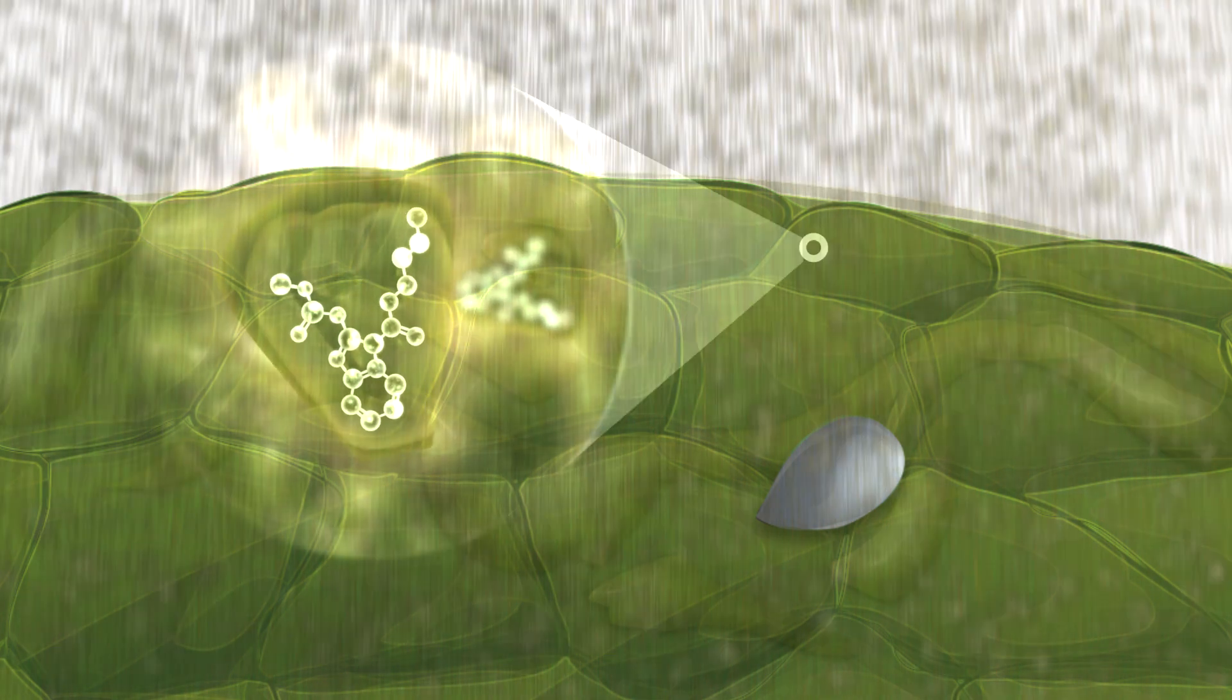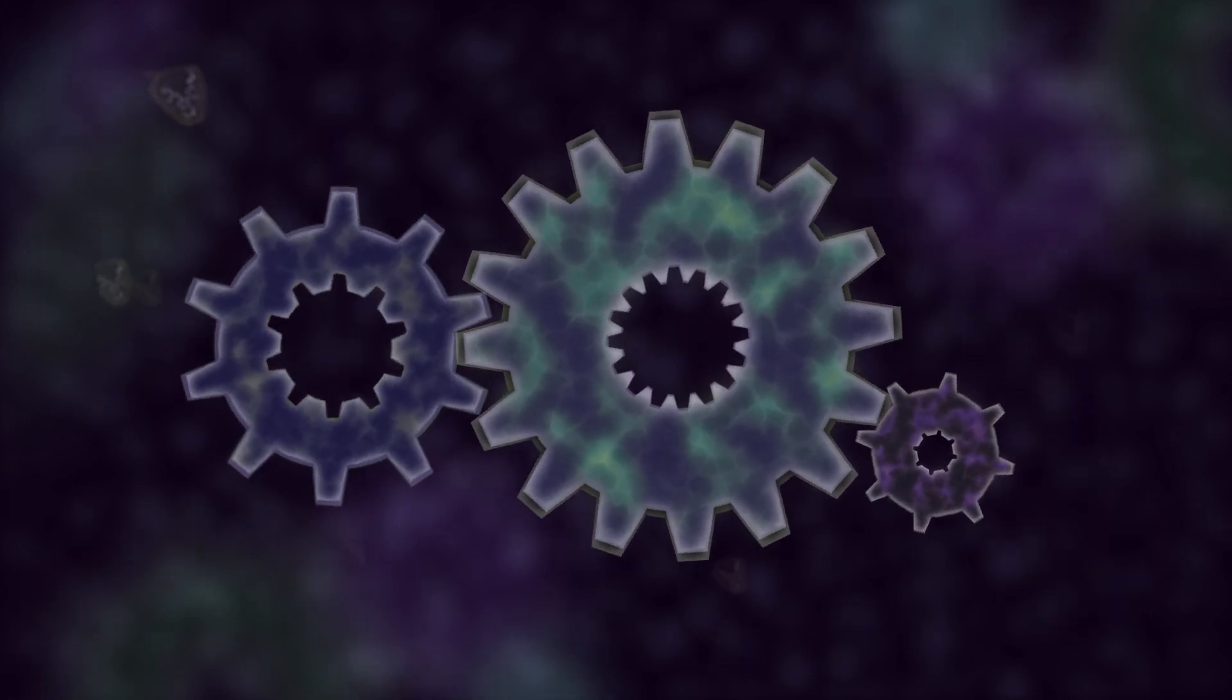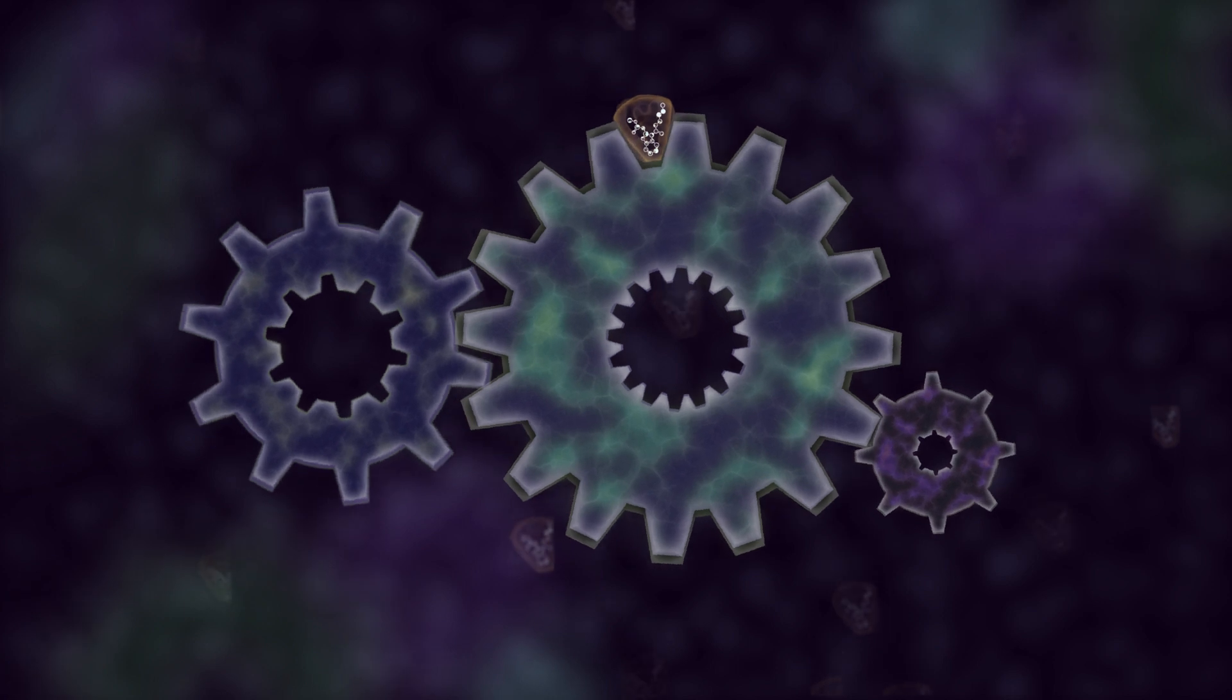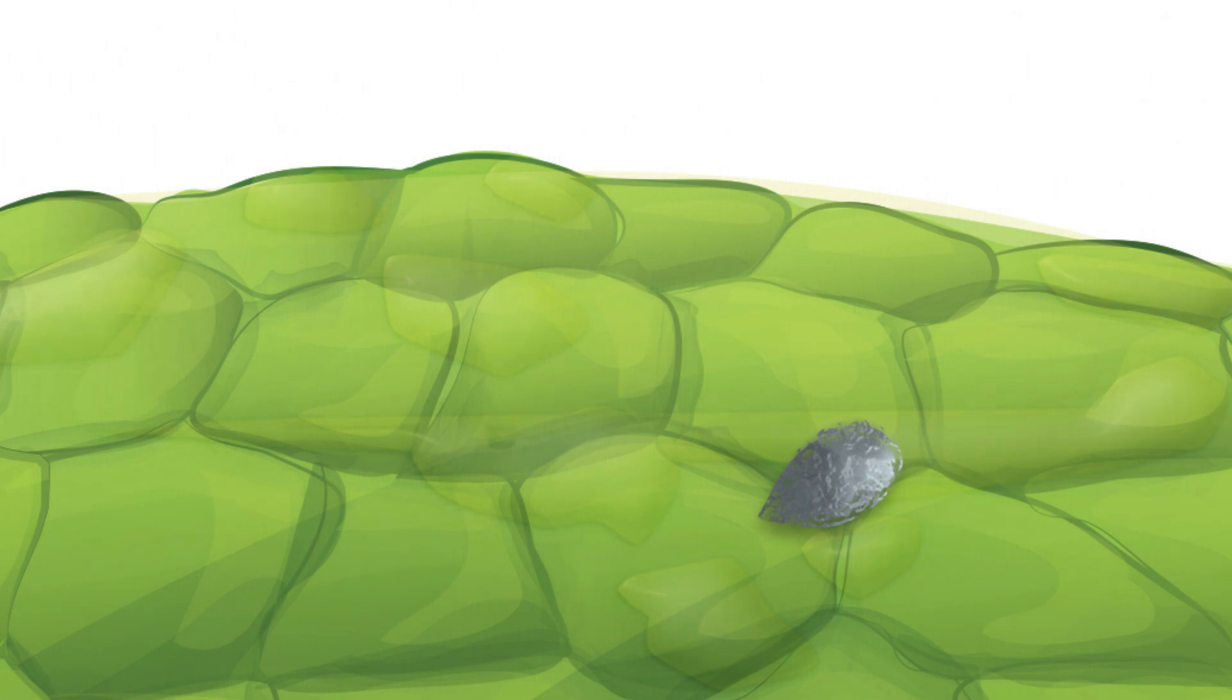Fungicides are composed of tiny molecules. These molecules can bind to proteins, machines that keep the fungal cells running. When the fungicide binds, the protein can no longer perform its function, resulting in death of the fungus.